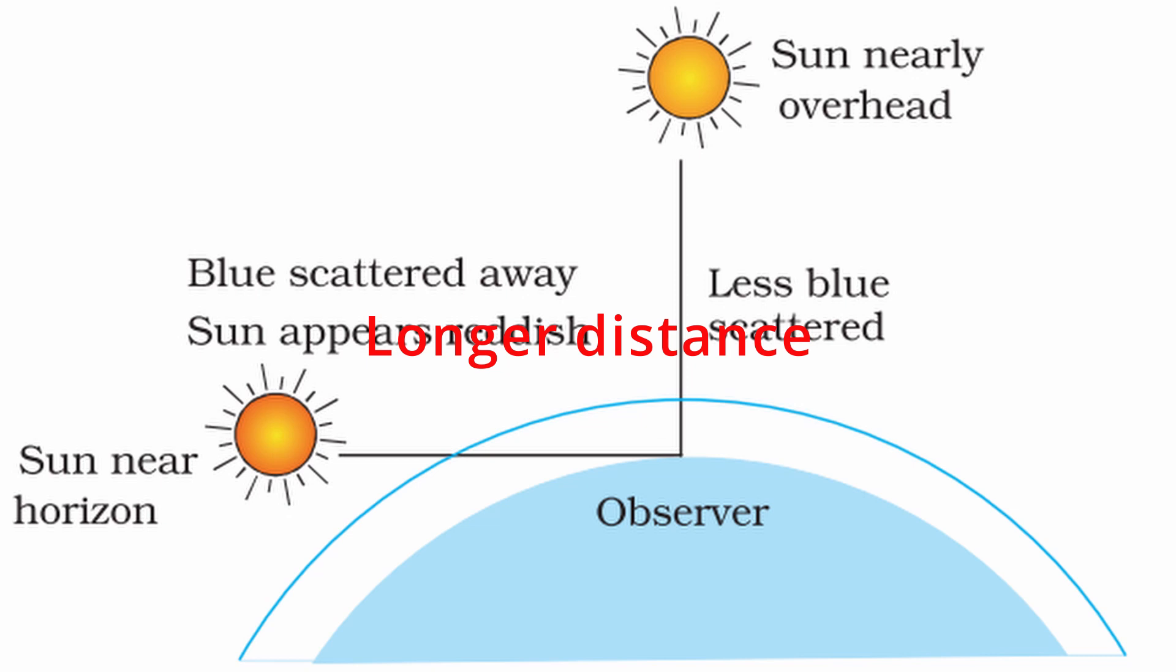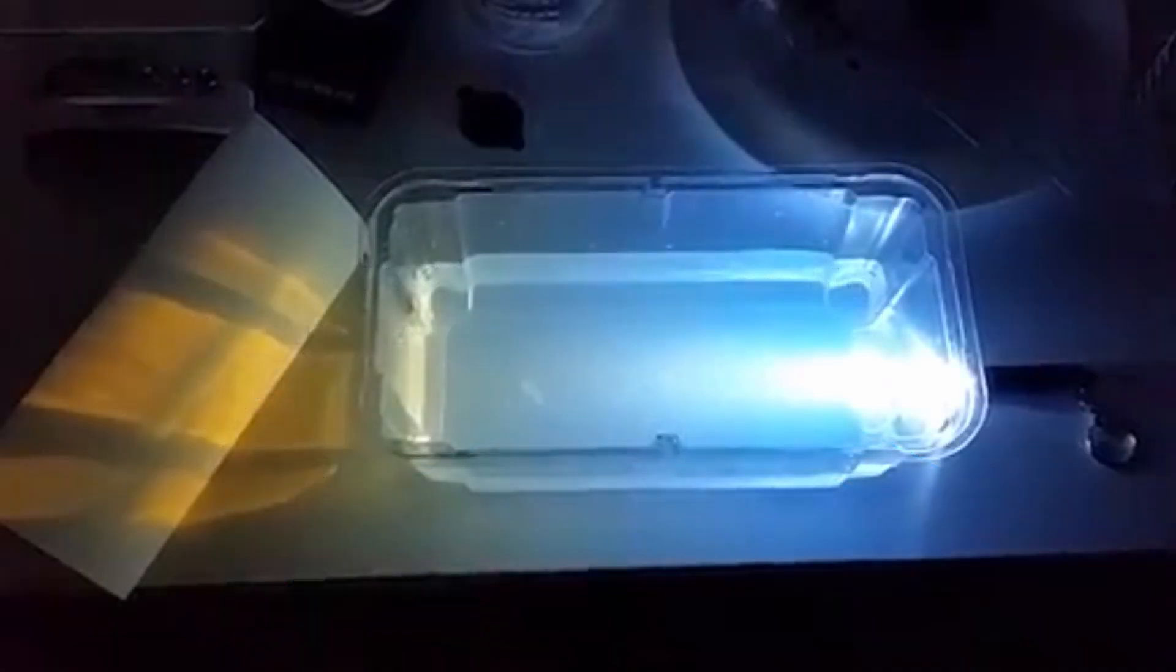jab sun horizon se neeche hai, tab usse aati hui light ko atmosphere mein zyada doori tay karni padti hai. To aap answer likhoge,